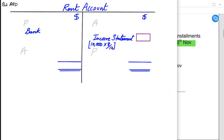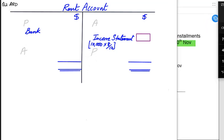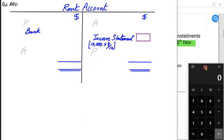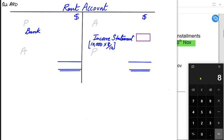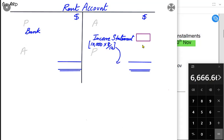We need to pro-rata the rent: 10,000 divided by 12 months gives a monthly rent of approximately 833. Eight months rent would therefore be 833 multiplied by 8, which is 6,667. This is the rent that needs to be charged this year for eight months.